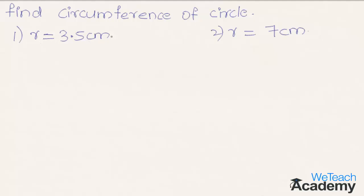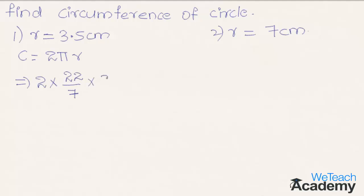Coming to the first one where radius is equal to 3.5 centimeters — we already know that circumference of a circle is given by the formula 2πr. By substituting the value of radius in the formula we get 2 into 22/7 into the radius 3.5, and by multiplying all the terms in the numerator we get 154 divided by the denominator 7.